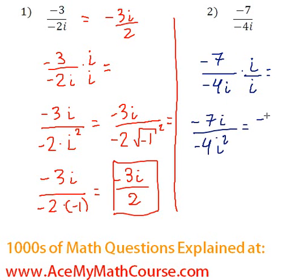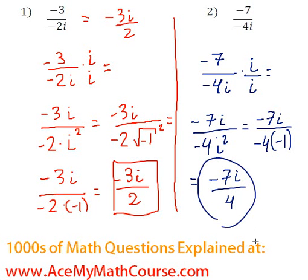We already know that i squared is negative 1. Here we're going to have negative 7i. Negative 4 times negative 1 is positive 4. That's it.